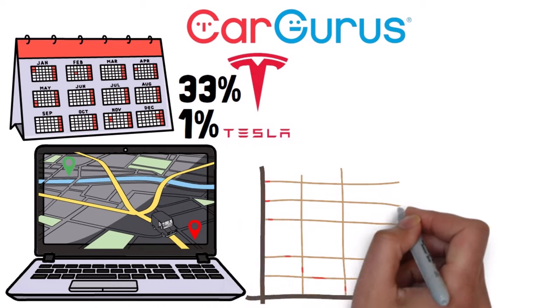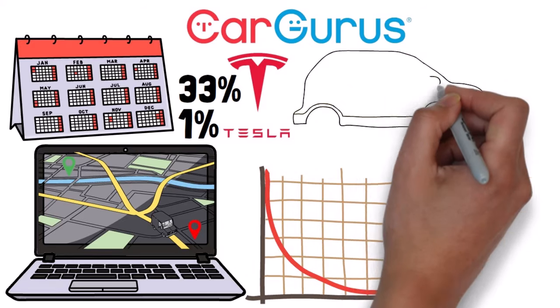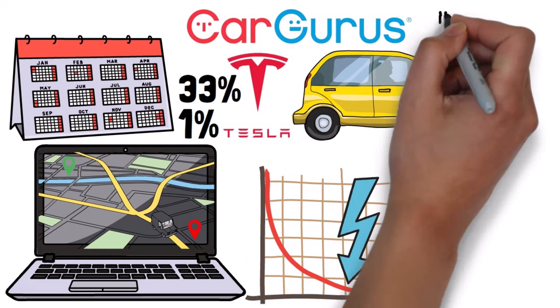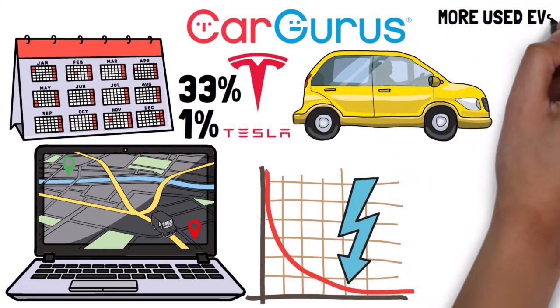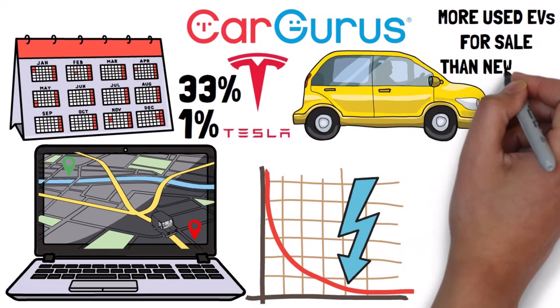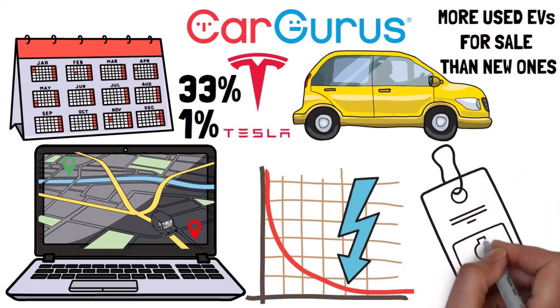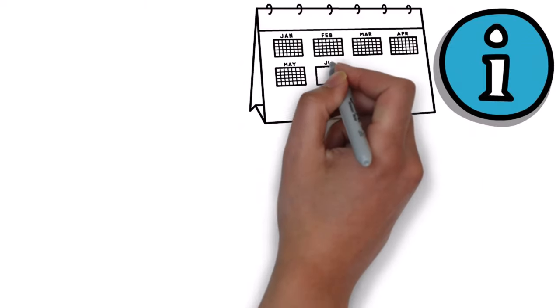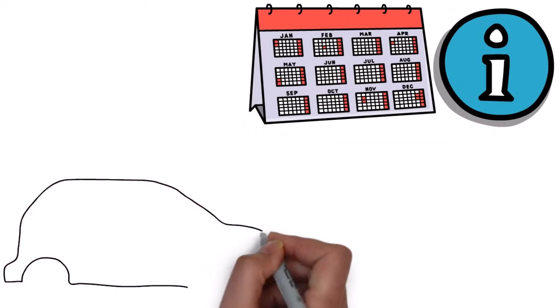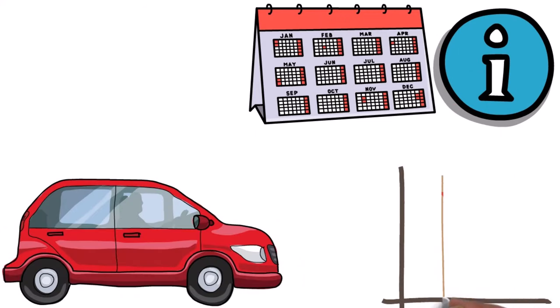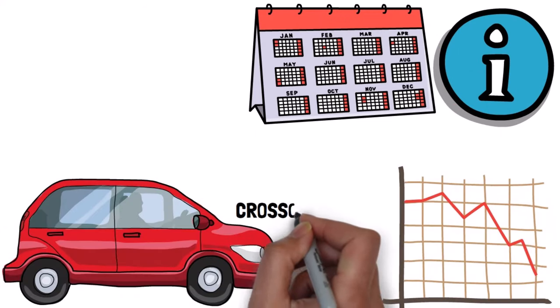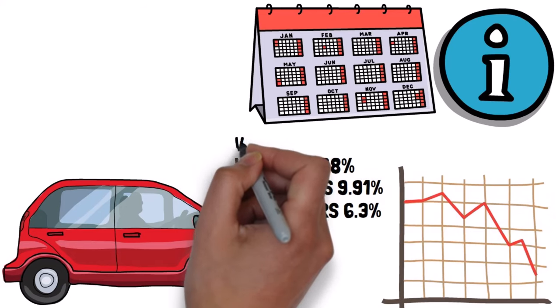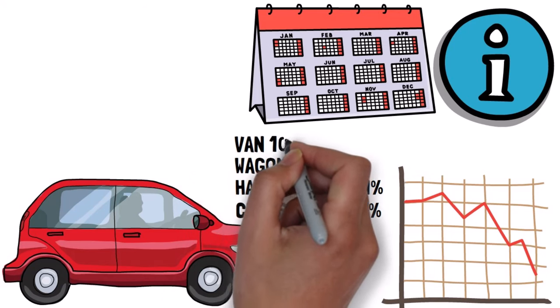Tesla is largely responsible for the decrease in electric vehicle prices. When they cut prices to sell more cars, other manufacturers had to lower their prices too to stay competitive. Additionally, for the first time, there are more used EVs for sale than new ones. So, the used car market is starting to take some sales from the new car market. Moreover, it's important to note that over the past year, different types of cars have seen price drops. Crossovers are down by 6.3%, hatchbacks by 99.1%, wagons by 99.8%, and vans are the hardest hit with a drop of more than 10%.